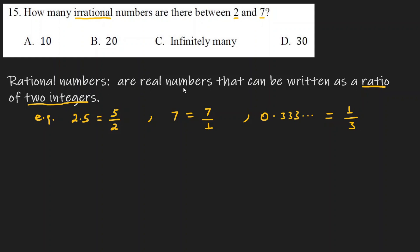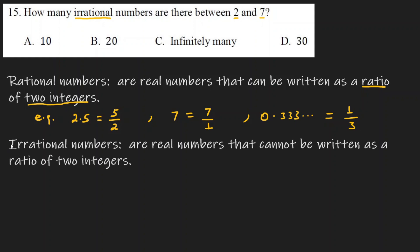Rational numbers are real numbers that can be written as a ratio of two integers. Now the definition of irrational numbers: irrational numbers are real numbers that cannot be written as a ratio of two integers. Rational numbers can be written as a ratio of two integers, but irrational numbers cannot.